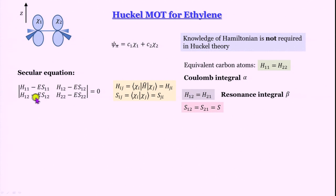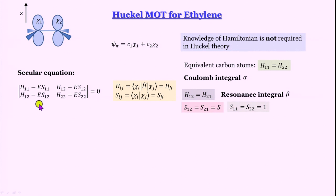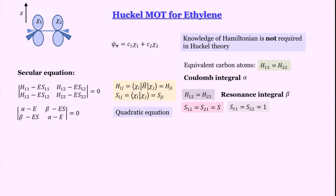With these substitutions, the secular equation simplifies: the first term becomes alpha minus E (since s11 = 1), the off-diagonal terms become beta minus E times S, giving a symmetric determinant equal to 0: (alpha minus E)(beta minus E·S) / (beta minus E·S)(alpha minus E) = 0. Expanding this determinant gives a quadratic equation: (alpha minus E) squared minus (beta minus E·S) squared equals 0.